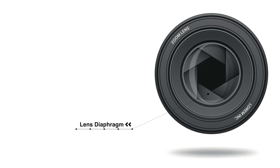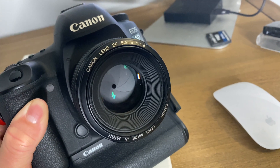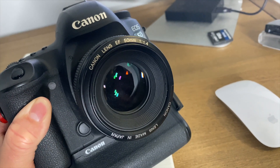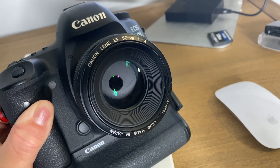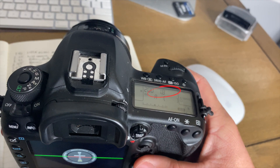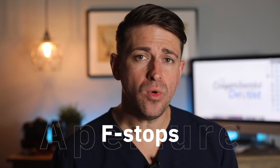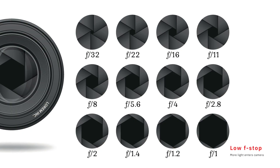Aperture affects exposure and light because it refers to the lens diaphragm opening that controls the amount of light that reaches the sensor — so how open or closed the lens is. The more open the diaphragm is, the more light that enters, and the more closed, the less light that enters. The opening and closing of the diaphragm are controlled by adjusting the aperture on the camera. Aperture is measured in f-stops. A low f-stop means the aperture is more open and more light will reach the sensor. In contrast, a high f-stop means the aperture is smaller and less light reaches the sensor.